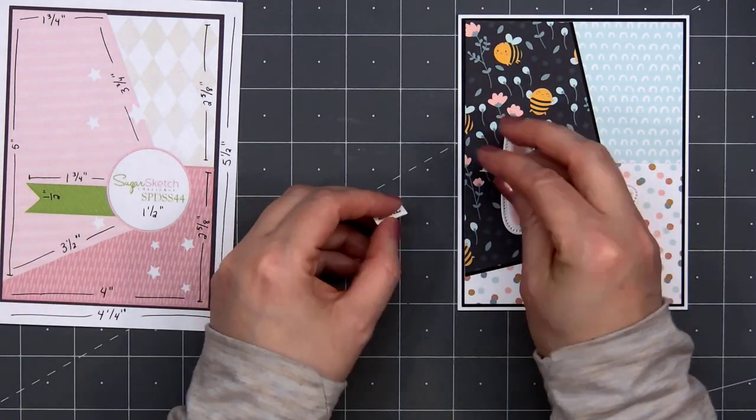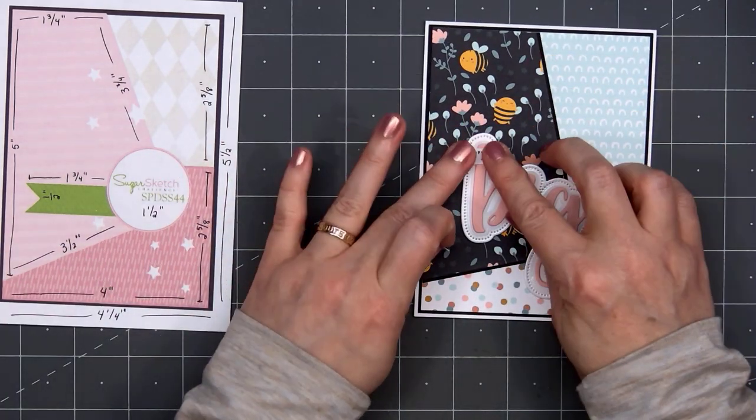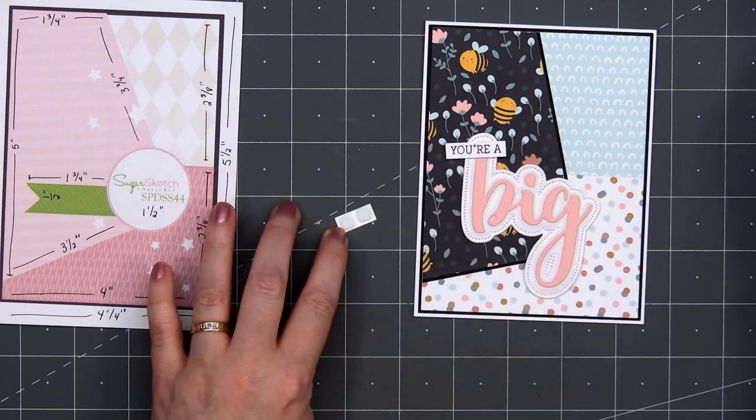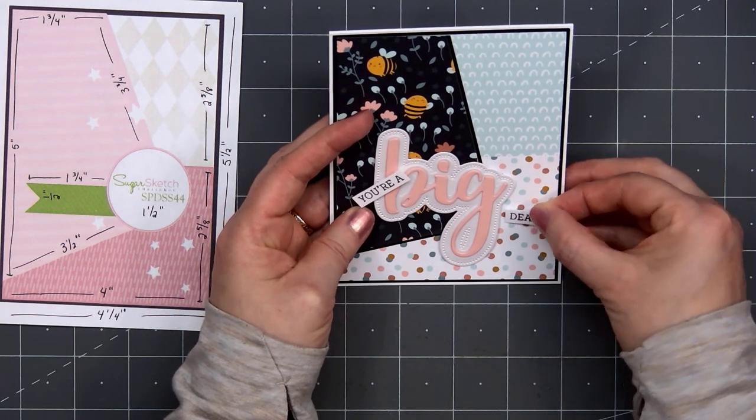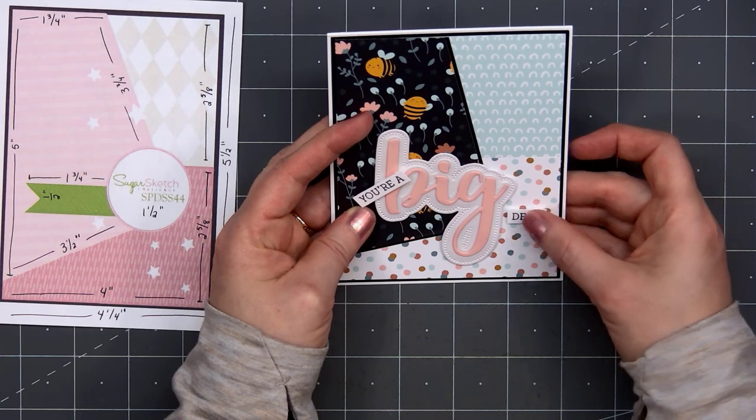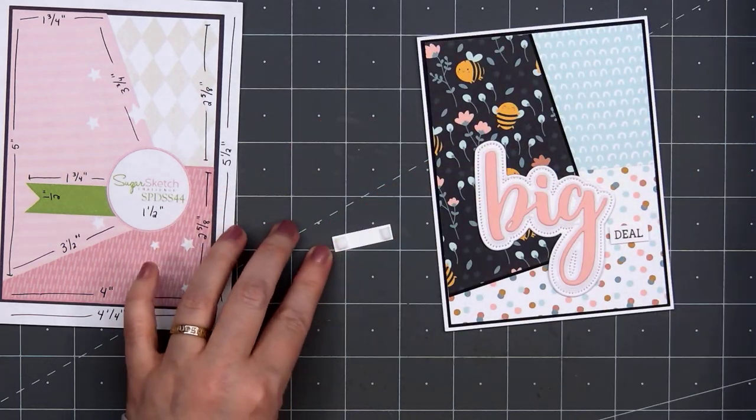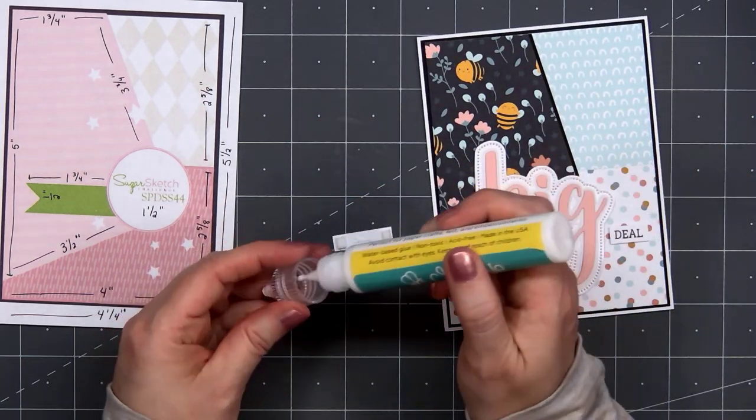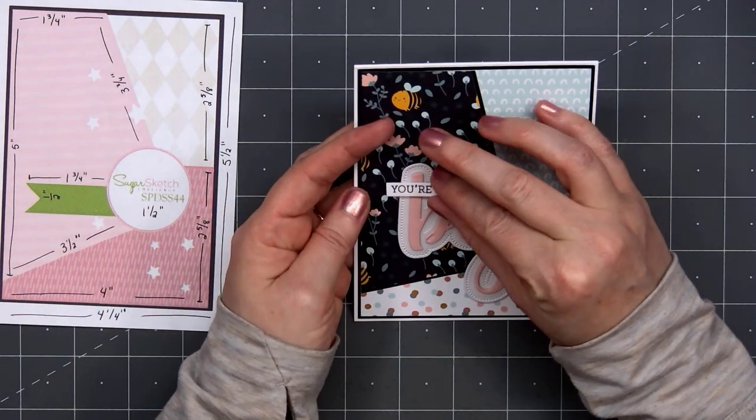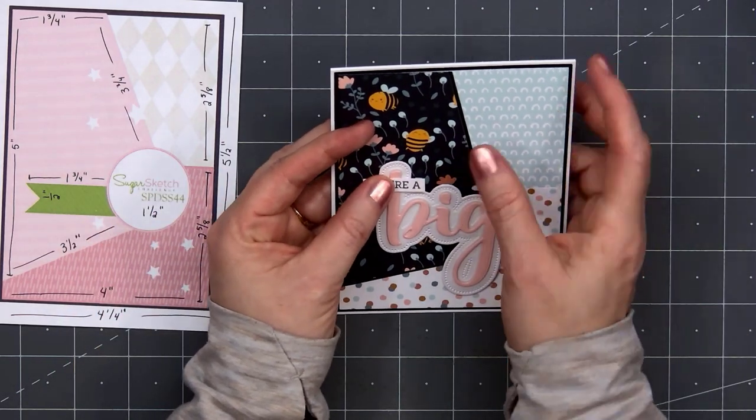Then I'll add the word big in place of that circle on the sketch. There is a little banner that comes out of the left side on the sketch, but I won't be adding that. One thing that's fun about using card sketches, you don't have to follow them exactly. You really can just use them for inspiration. I've stamped out the rest of the sentiment and cut this out, so it'll be you're a big deal.